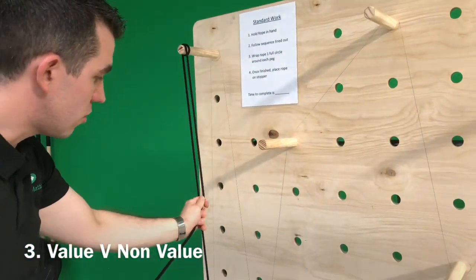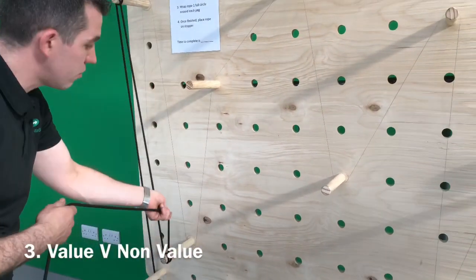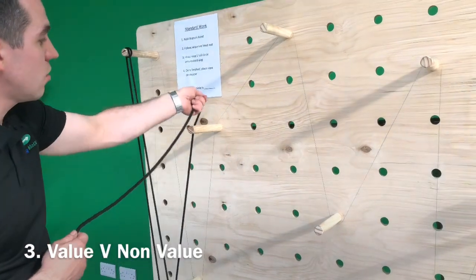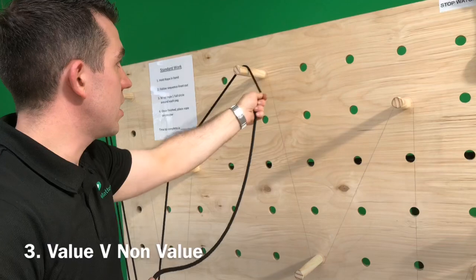Okay, so value, non-value, non-value, non-value, value. Okay, non-value, non-value, non-value, value, non-value. So all this waste in between is what we're trying to eliminate.